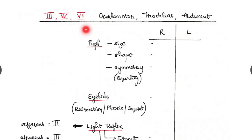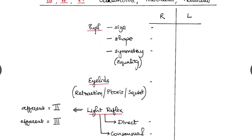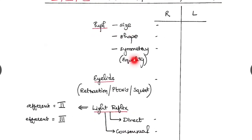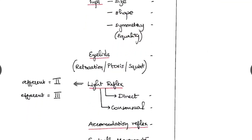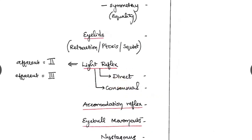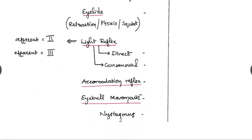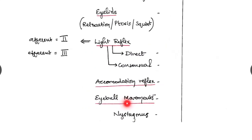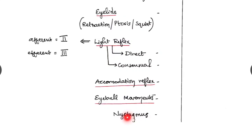And three, four and six: oculomotor, trochlear and abducens. Tabulate it as right and left. And check the pupil, its size, shape, symmetry. The eyelids where there is any retraction, ptosis or squint present. Check for light reflex, the direct and consensual light reflex. The afferent pathway for light reflex is second nerve. And efferent is the third nerve which is oculomotor. And look for accommodation reflex, the eyeball movements and also any nystagmus.